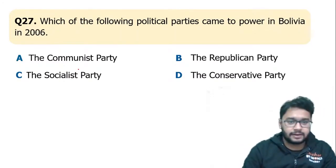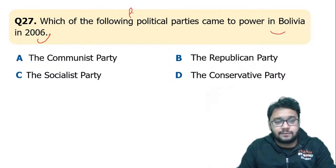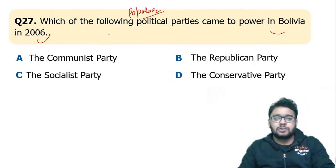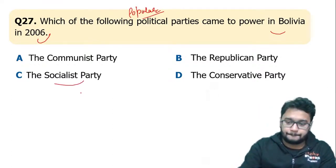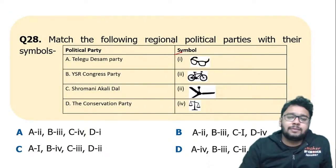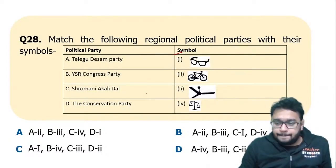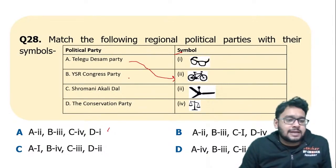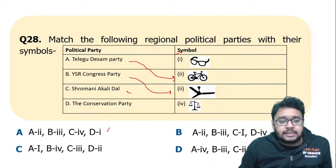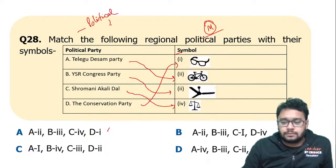Which party came to power in Bolivia in 2006? This question came from Popular Struggles and Movements. The correct answer is the Socialist Party, option C. Next, match the political parties with their symbols. The correct answer is A: Telugu Desam Party has a bicycle, YSR Congress Party has a fan, Shiromani Akali Dal is from Punjab, and the Conservative Party symbol is also matched. This is a moderate-level question from the Political Parties chapter.